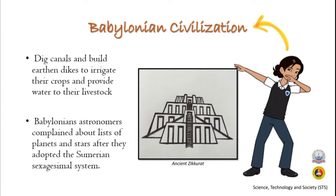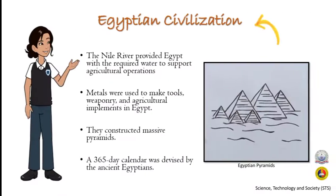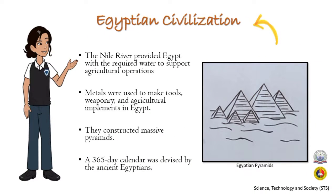In Babylonian civilization, Babylonian astronomers compiled lists of planets and stars after they adopted the Sumerian sexagesimal system. The Nile River provided Egypt with the required water to support agricultural operations during Egyptian civilization, and metals were used to make tools, weaponry, and agricultural implements.